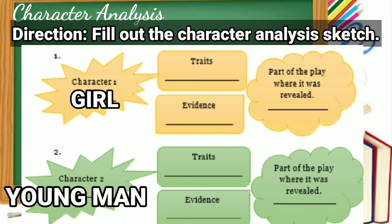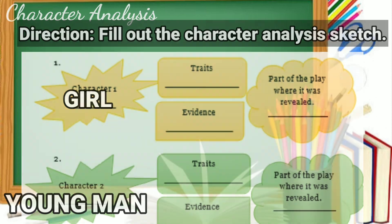The last activity is the character analysis. Fill out the character analysis sketch for the two main characters — the girl and the young man. Write down the traits you observed based on their actions or dialogues, provide evidence for each trait, and note the part of the play where you observed that characteristic.